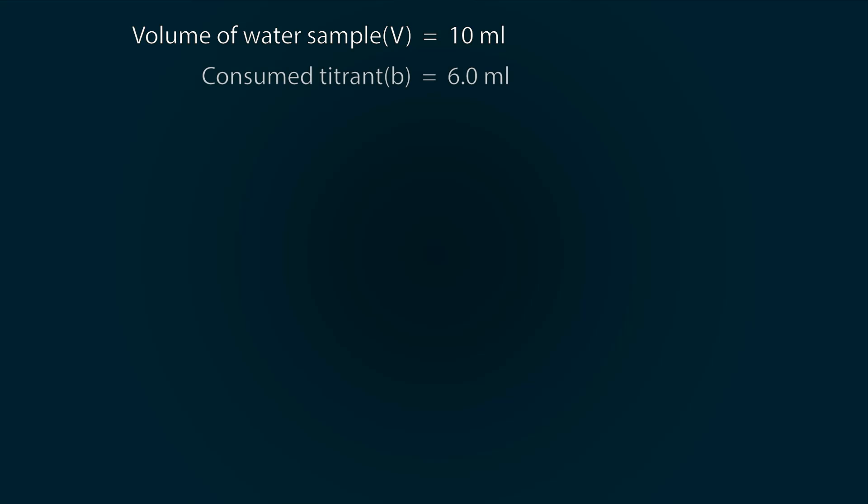Let's do some calculations. The volume of water sample used is 10 milliliters. The consumed titrant is 6 milliliters. The molarity of NaOH solution is 0.1 molar. The molecular weight of HCl is 36.4. So let's find out the percentage of HCl involved.